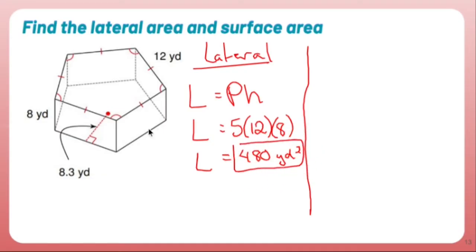This makes sense because if I were just to take one of these rectangles, I would get 12 — because it's 12 yards long — times 8, which is 96. Multiply that by five and the numbers work out just fine.